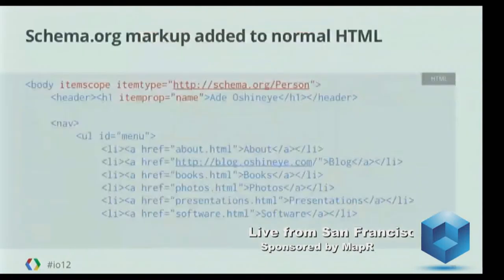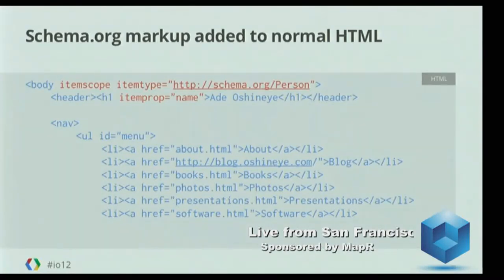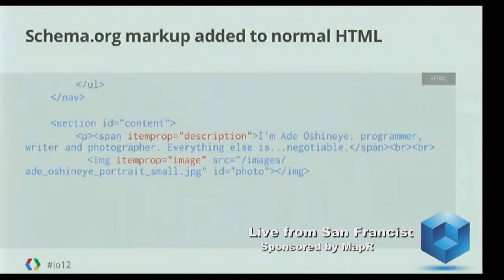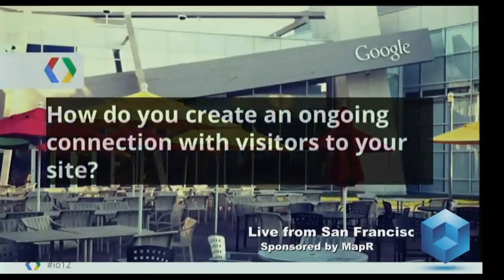What you want is some way to markup the HTML. So if you look at the red sections, what I've done is I've basically said that I want this whole page — from the body element downwards to the closing body element — to be about a person. And then I want to say the name of the person. Just by adding those red sections, I've said this page is about an entity, I've given the description, I've given the image, and now you know what the page is about.